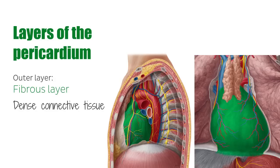This fibrous exterior lining mechanically functions to prevent the heart from overfilling, because the fibrous tissue as a whole is resilient, and although flexible, it does not stretch.